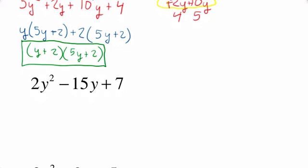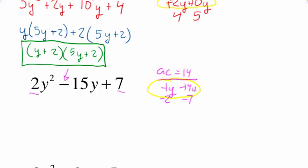Let's take a look at one that has a minus sign in it, just to make sure we're keeping track of all the possibilities. Here, the B term is negative 15y. So let's start off with AC — that means we multiply A times C, and AC equals positive 14. So the factor pairs are 1 times 14, or 2 times 7. But we need factor pairs that add up to negative 15, so we need negative factors: negative 1 times negative 14. The pair that adds up to negative 15 is negative 1 and negative 14.